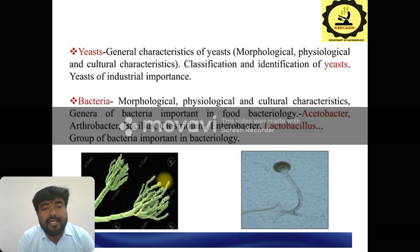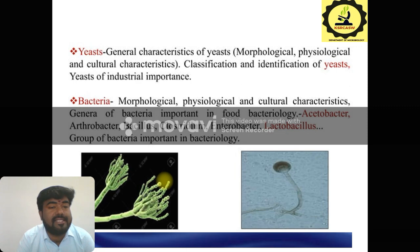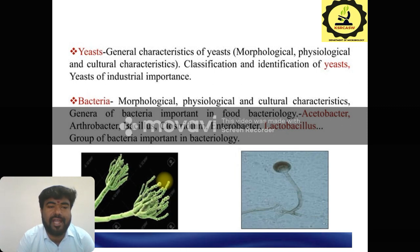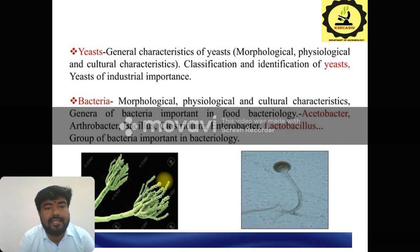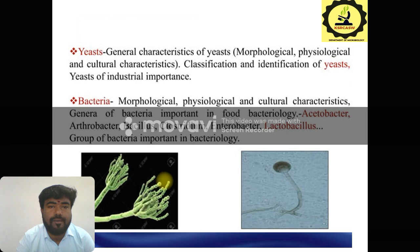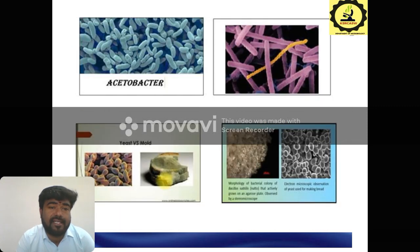Then especially yeast. Generally, yeast you can identify by morphological and also physiological and cultural characters. The most important example is Saccharomyces cerevisiae, which is the important yeast organism used for the food fermentation process, especially beer and wine production. And also bacteria are also important organisms, such as Acetobacter, Clostridium, and Lactobacillus — some other groups of organisms used in food microbiology.